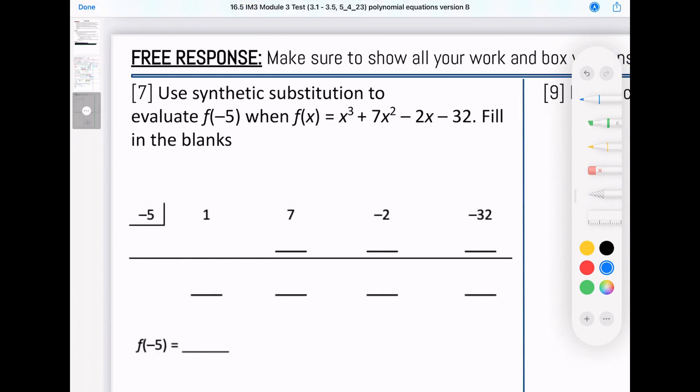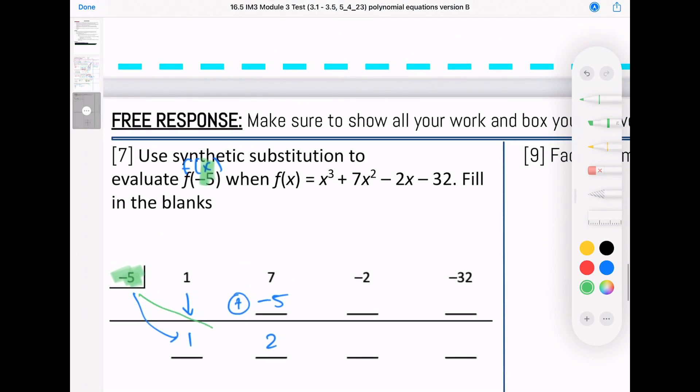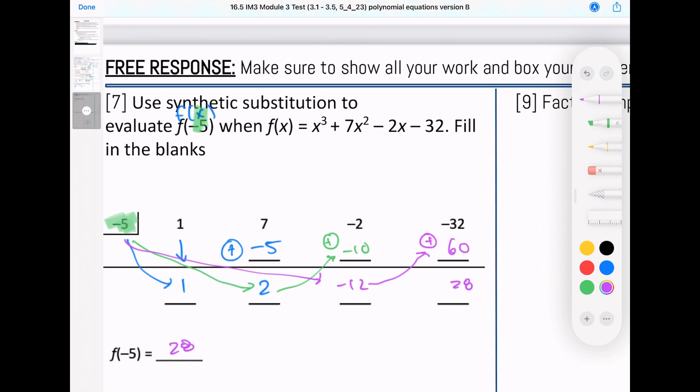Use synthetic substitution. This basically says your x value is negative 5, and that negative 5 is here. Bring this one down, then you're going to multiply, so that would be negative 5, and then you're going to add these two numbers. Same thing: negative 5 times 2, which is negative 10, and then we're going to add down here. This will equal negative 12, so then negative 5 times negative 12, that would be a positive 60, and then we're going to add those and you'll get 28. So f of negative 5 equals 28 is my answer.